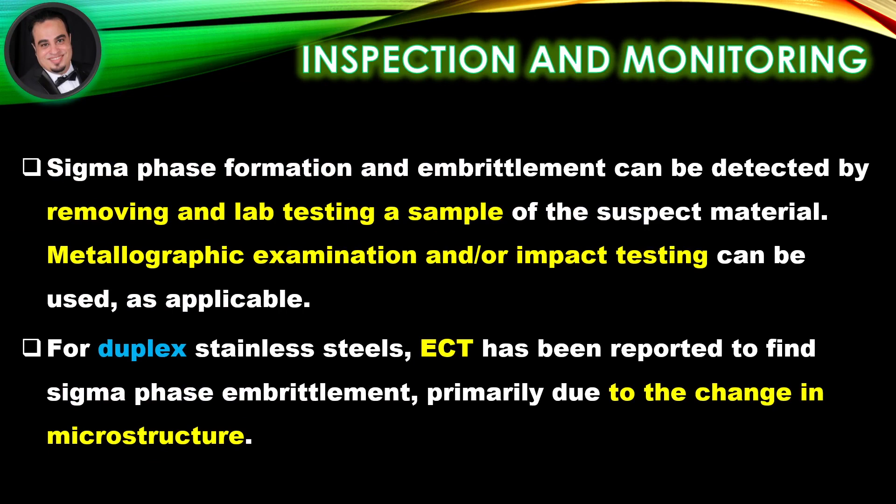Inspection and monitoring. Sigma phase formation and embrittlement can be detected by removing and lab testing a sample of the suspect material. Metallographic examination and/or impact testing can be used, as applicable, for duplex stainless steels. Eddy current testing has been reported to detect sigma phase embrittlement, primarily due to the change in microstructure.